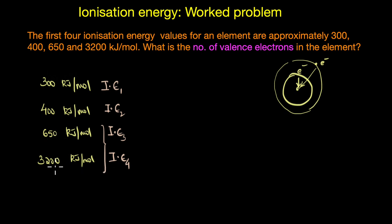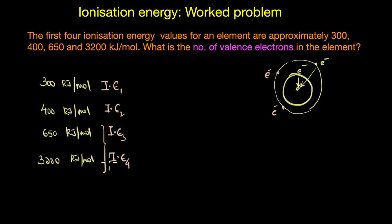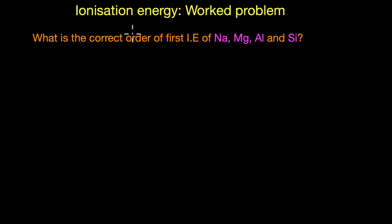The substantial increase in ionization energy from the third to the fourth means that the fourth electron is much closer to the nucleus and experiences a greater attractive force. The first three electrons are easy to remove, making them likely valence electrons, whereas the fourth electron is much harder to remove and is most likely a core electron. Therefore, the number of valence electrons in this element is three.